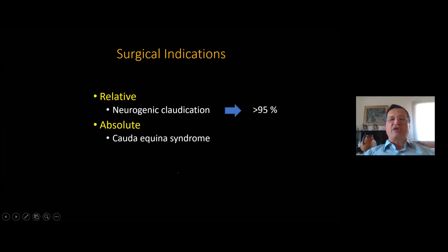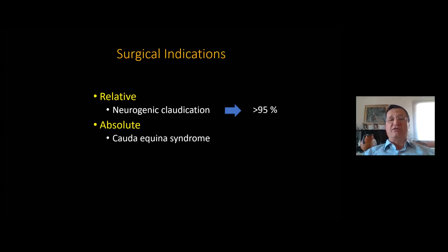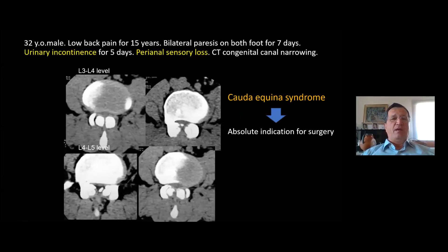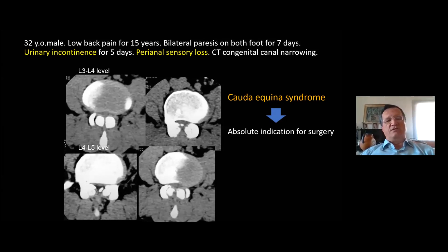Neurogenic claudication is the main symptom in more than 95% of cases. The absolute indication is cauda equina syndrome. In most instances we offer surgery to a patient in order to increase quality of life. This is a congenital narrowing case with cauda equina syndrome and perianal sensory loss and urinary incontinence — this patient must have emergent surgery.